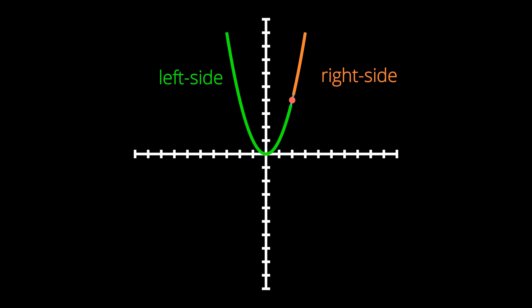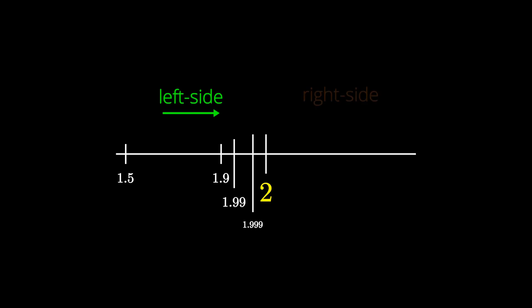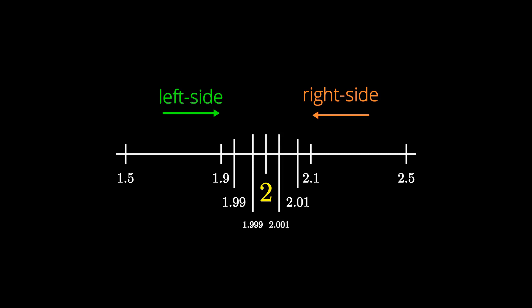Let's visualize this on a number line and place 2 in the middle. If we look at the left side, values that are really close to 2 would be like 1.5, 1.9, 1.99, 1.999, etc. And from the right side, values that are really close to 2 would be like 2.5, 2.1, 2.01, 2.001, etc. So essentially, what we are doing is plugging in these values that are really close to 2 into f of x.